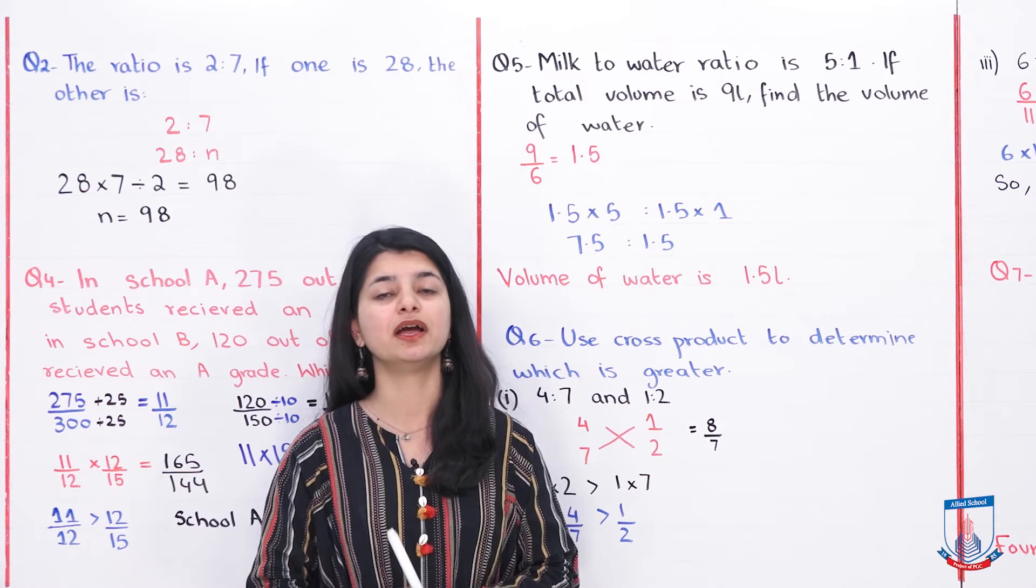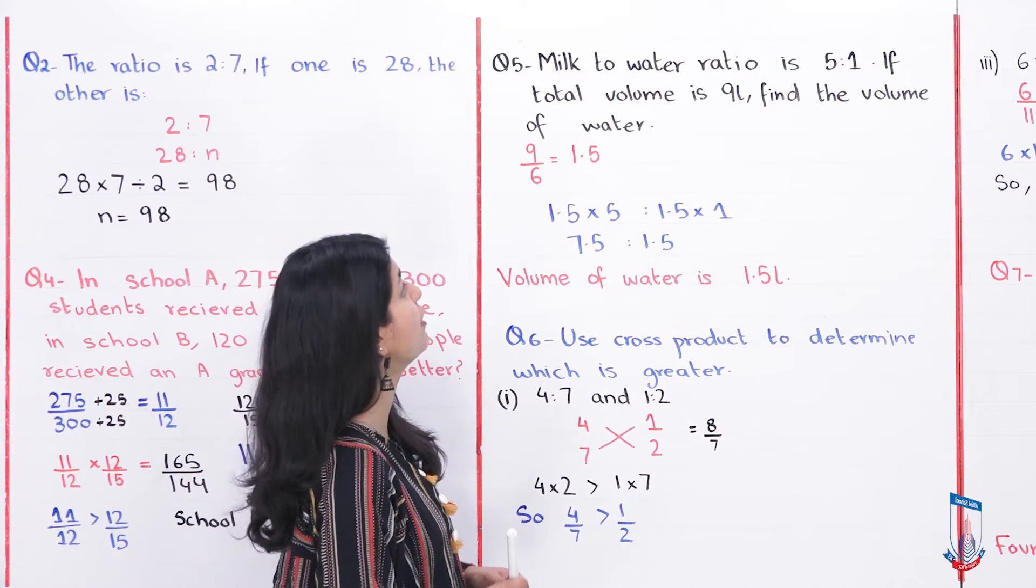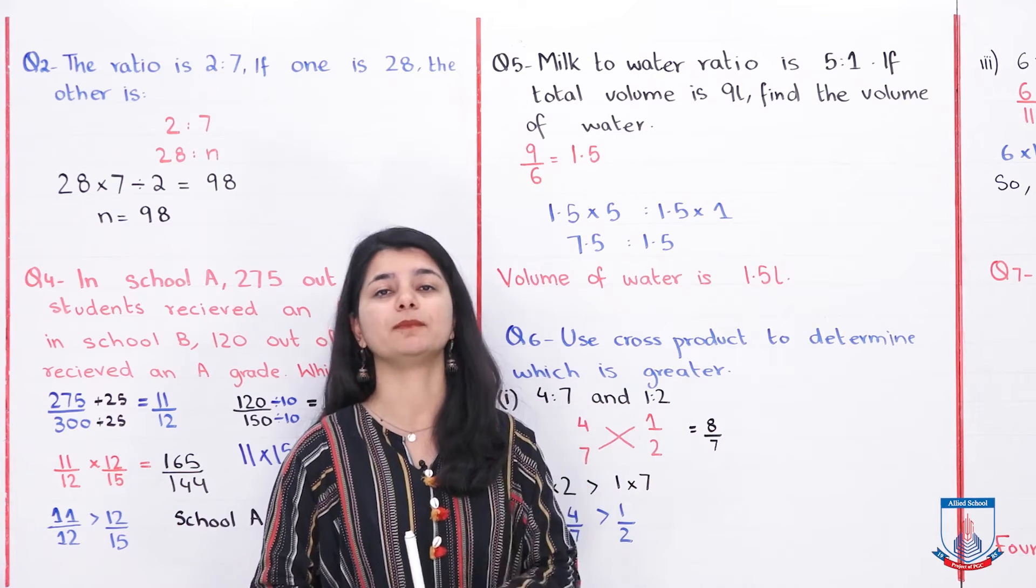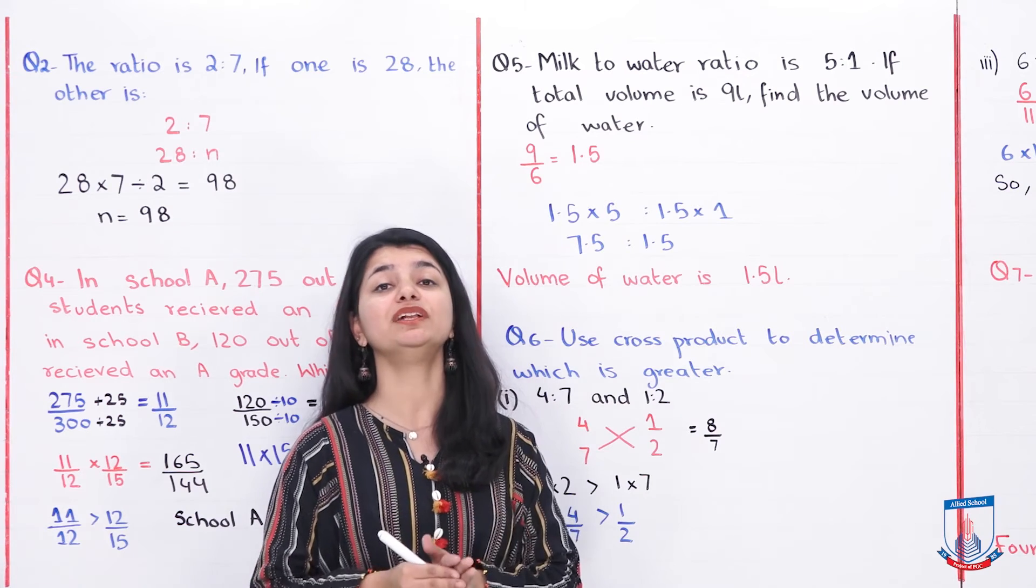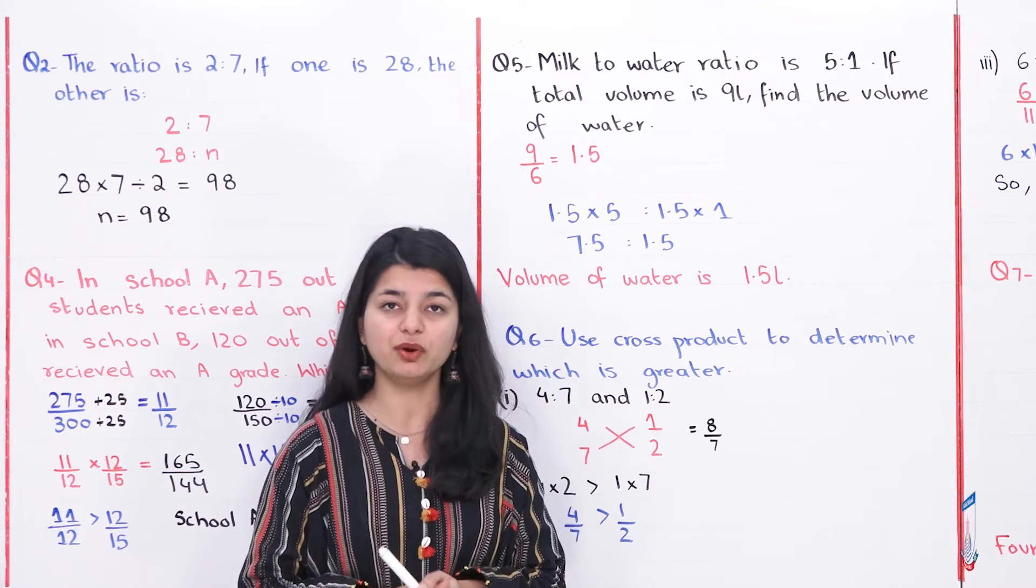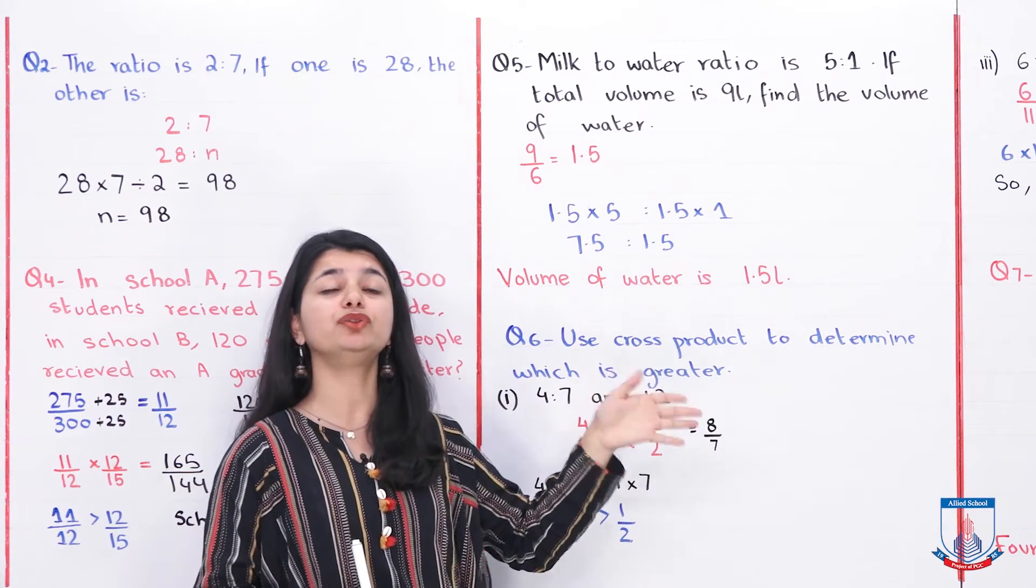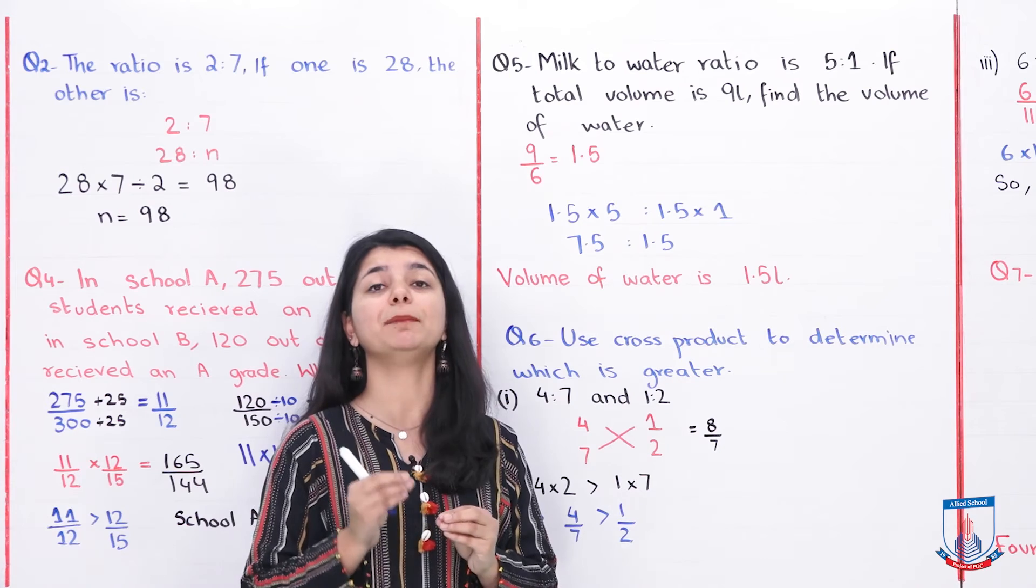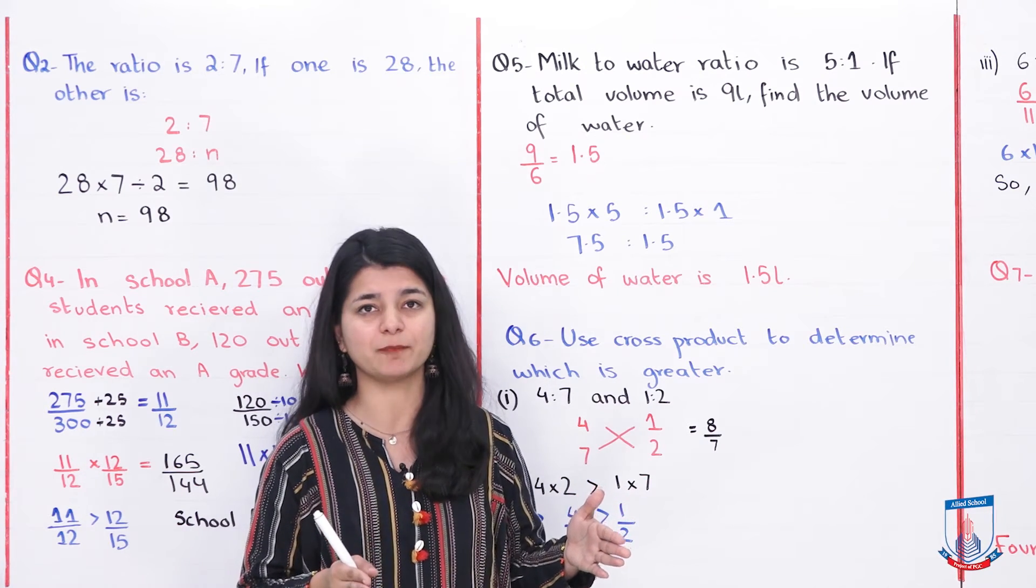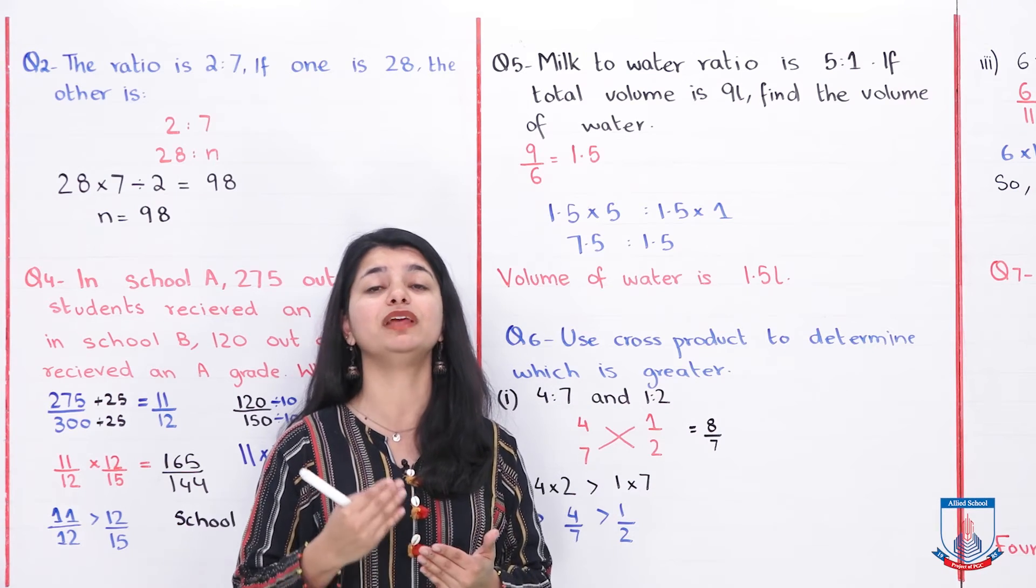I hope you understood this. Now let's look at our next question. Now it's time to attempt question number 5. The fifth question is, the milk to water ratio in a container is 5 to 1. If the total volume is 9 liters, find the volume of water in the container. There's a mixture, inside it the milk and water ratio is 5 to 1. If there are 5 liters of milk, then there is 1 liter of water. Now they're saying, what's the total? 9 liters. Now you have to tell us that in these 9 liters how much is milk and how much is water. For that, we have to do this: first you see in the ratio how many total parts there are.